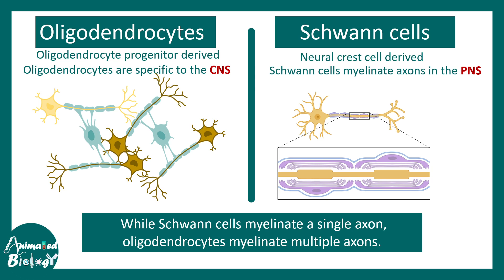Oligodendrocytes are generated from oligodendrocyte progenitor cells, which are present in the brain. Schwann cells, on the other hand, are derived from neural crest cells.